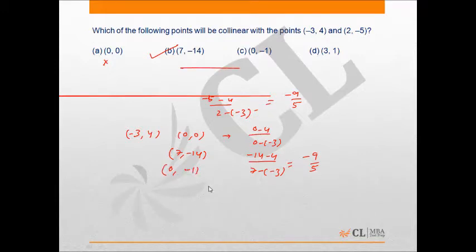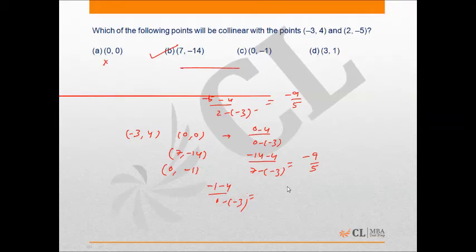The slope comes out to be (-1 - 4) upon (0 - (-3)), which is not equal to -9/5, and the same would be the case with the last option as well. We'll see you next time.